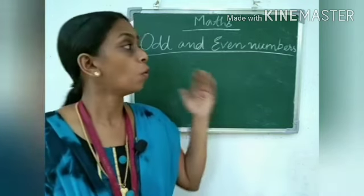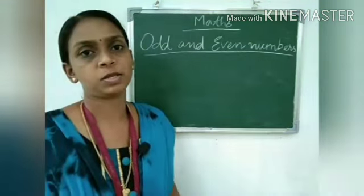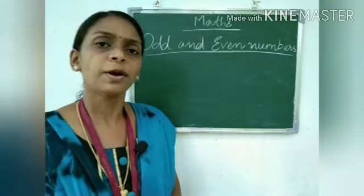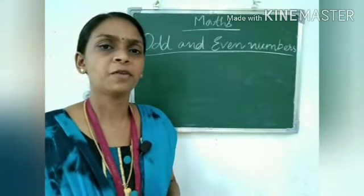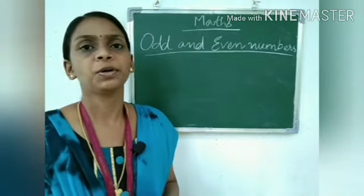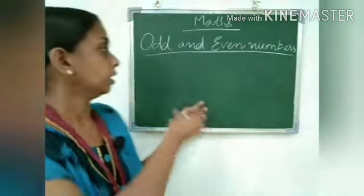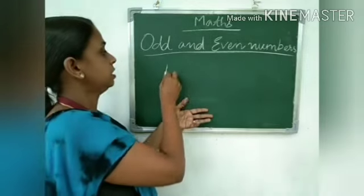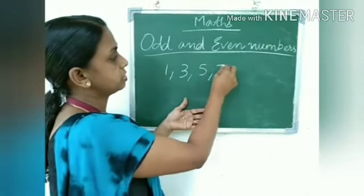Now we will reach the end of this chapter. Only one portion is left to study. So let us start. We are now going to study odd and even numbers. What do you mean by an odd number and what do you mean by an even number? The odd number digits are: 1, 3, 5, 7, 9.